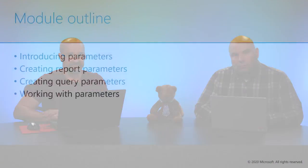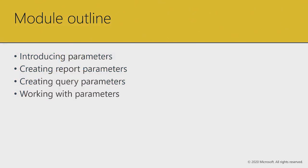In this module, we'll start to work with parameters. Having learned how to connect to data, retrieve data, and lay it out, it's a common requirement that you'll have parameters to allow your users to interact, typically for purposes of filtering. Let's introduce these parameters — specifically the two types: report parameters and query parameters. In the next video, we'll work with these parameters in different scenarios.